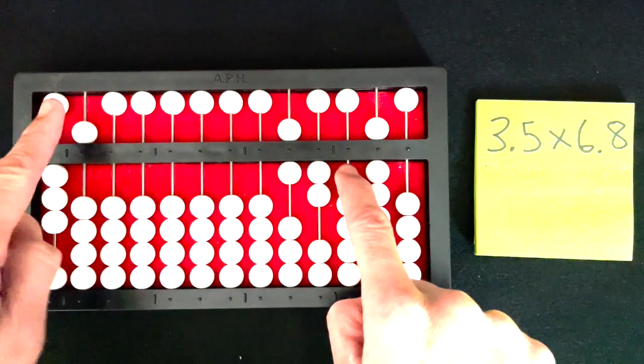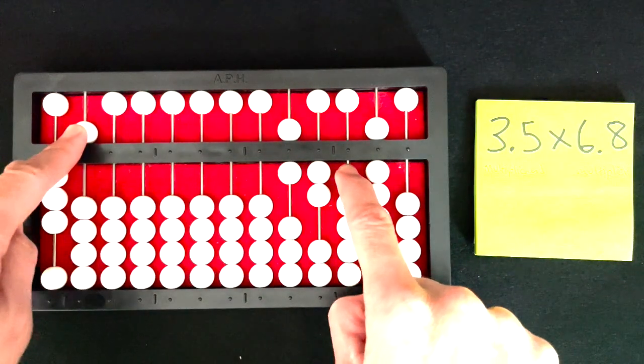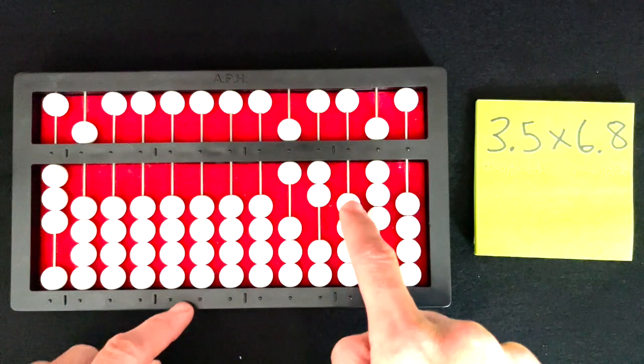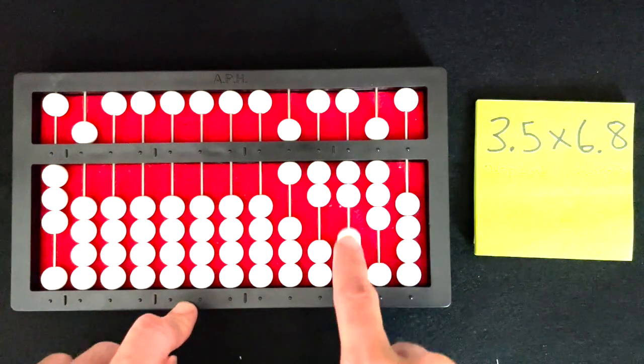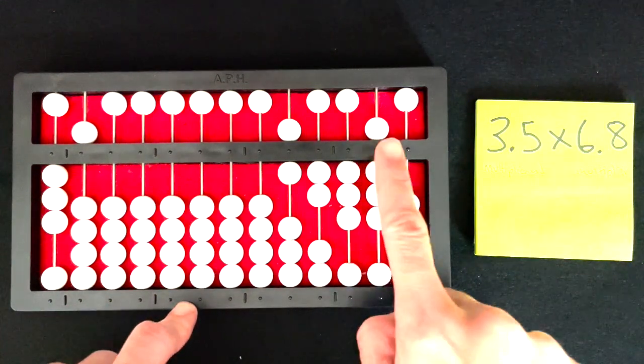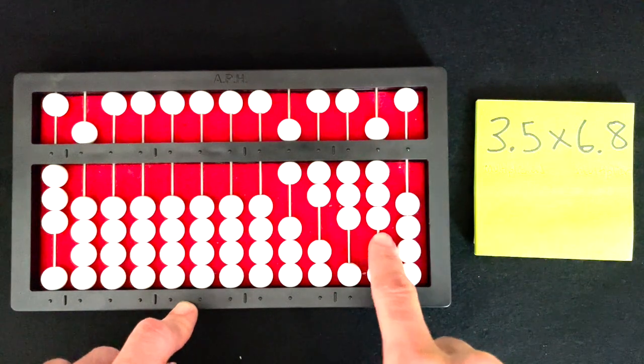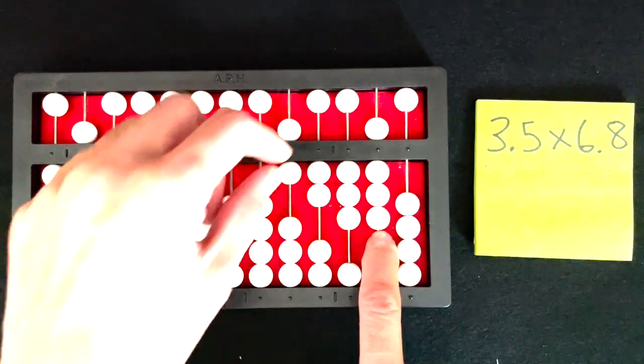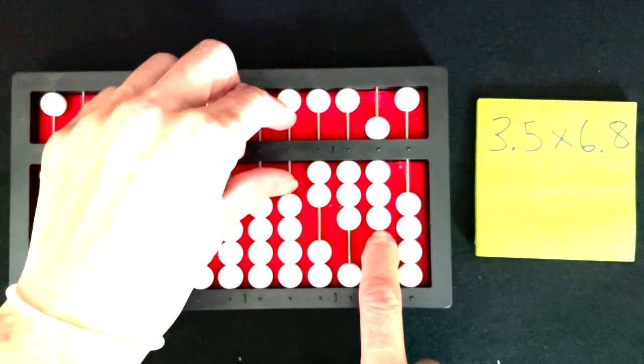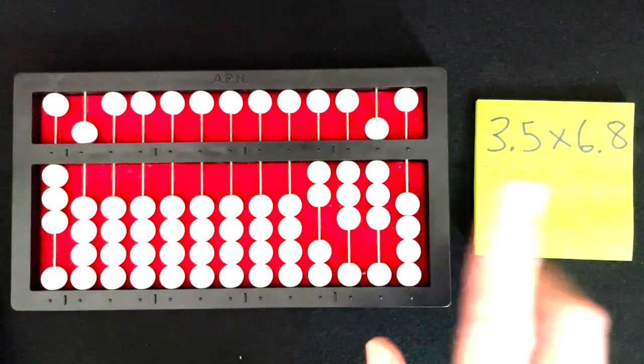6 times 5, and I know that's a 30. So I'm going to say right, 1, 2, 3 in my hundreds column and 0, nothing in my tens column. I'm going to clear my multiplier.